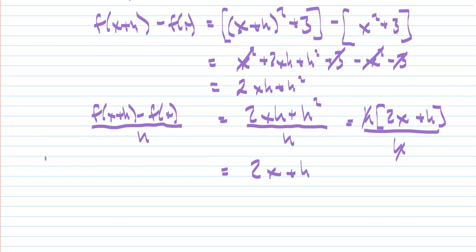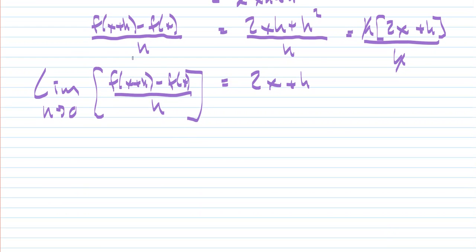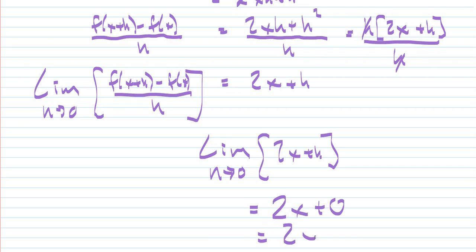Finally, we want to take the limit as h approaches 0 of the difference quotient. And so that means we want to find the limit of 2x plus h. Find the limit as h approaches 0 of 2x plus h. Well, as h approaches 0, this just becomes 2x plus 0 or 2x.